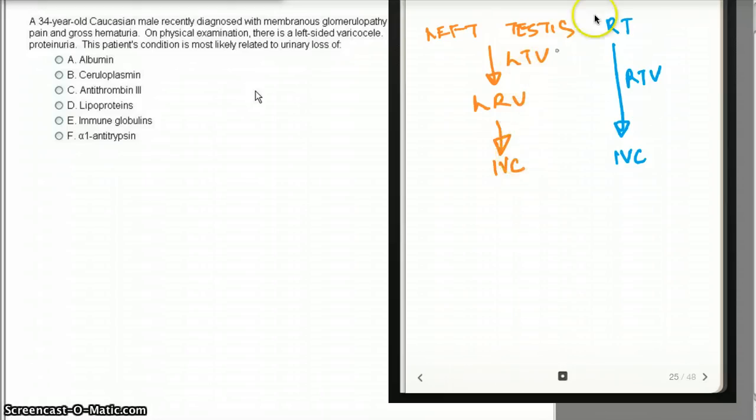There is no right renal vein involved. As a result, there are more stops on the way for the left testes than the right testes. So the chances of obstruction are more on the left side than on the right side.